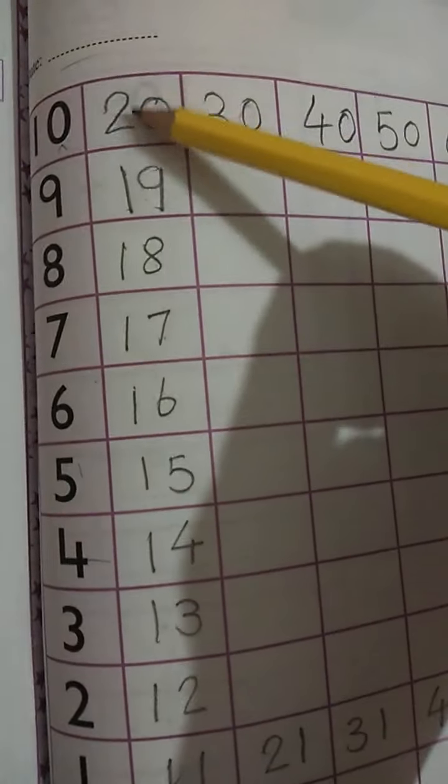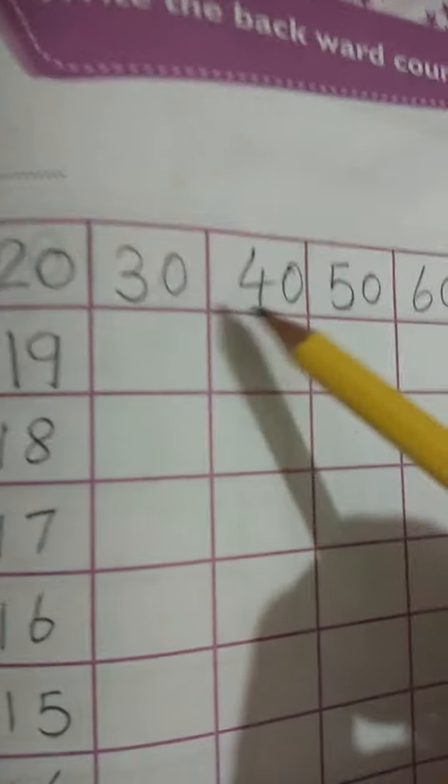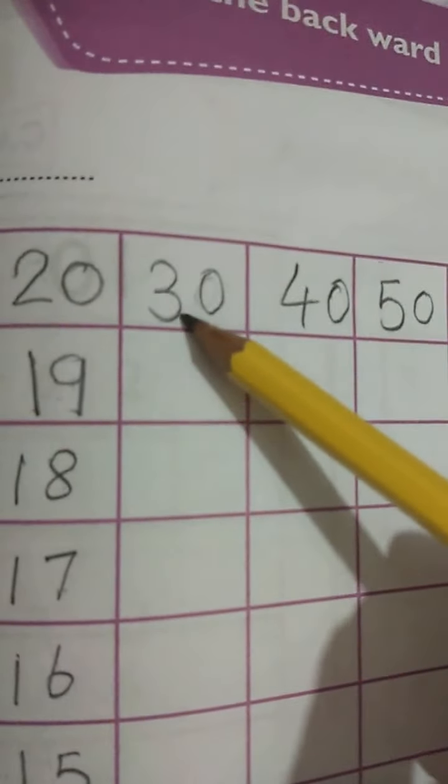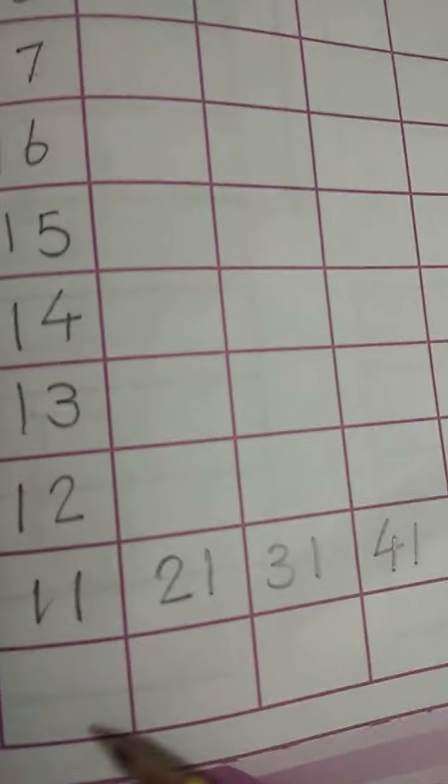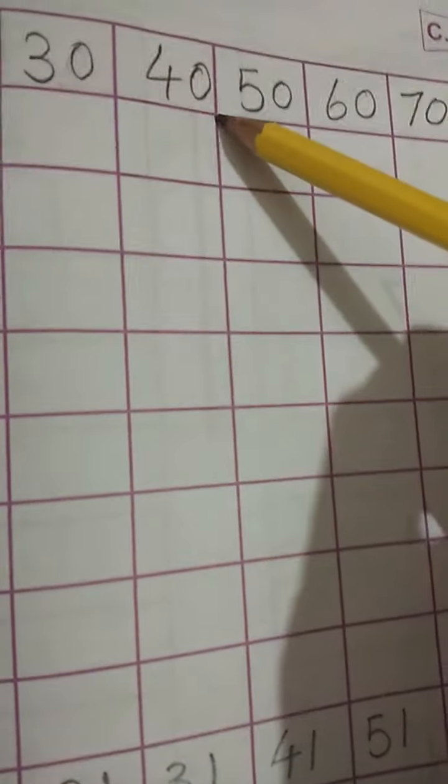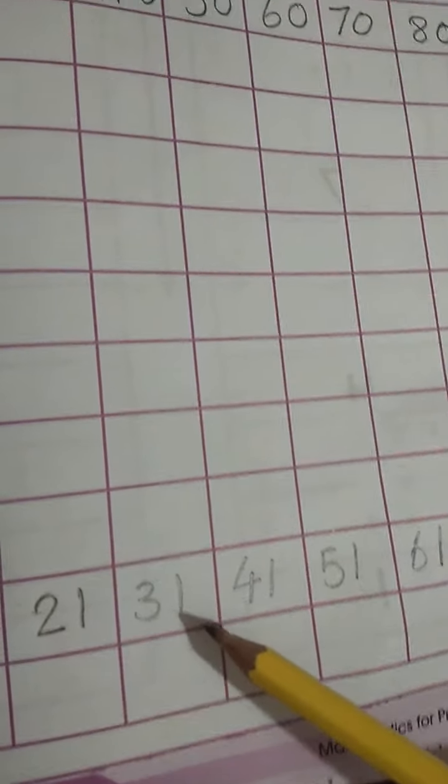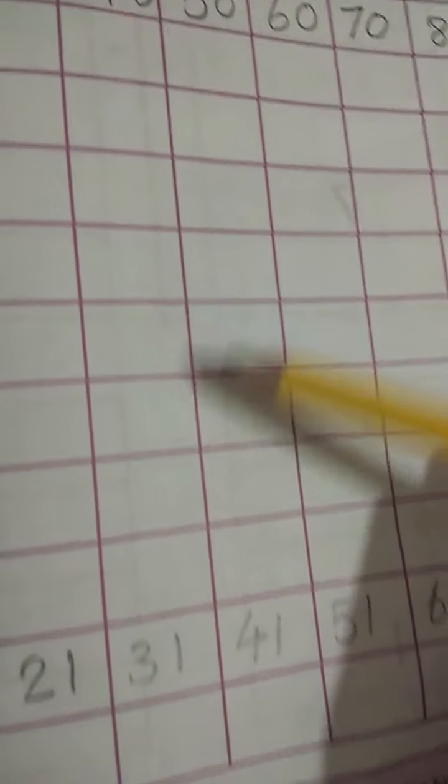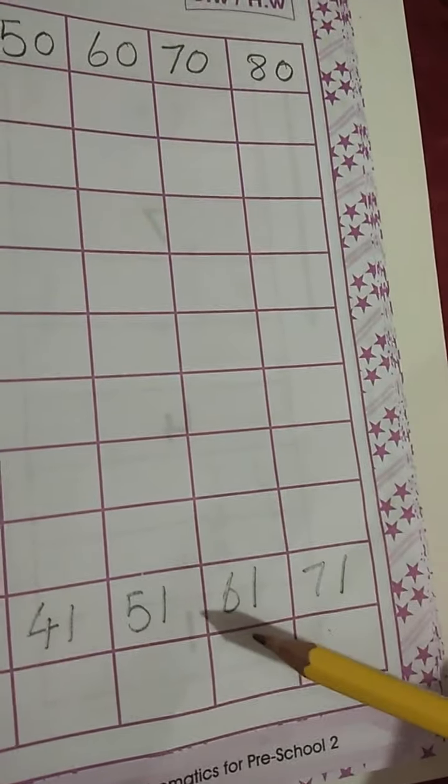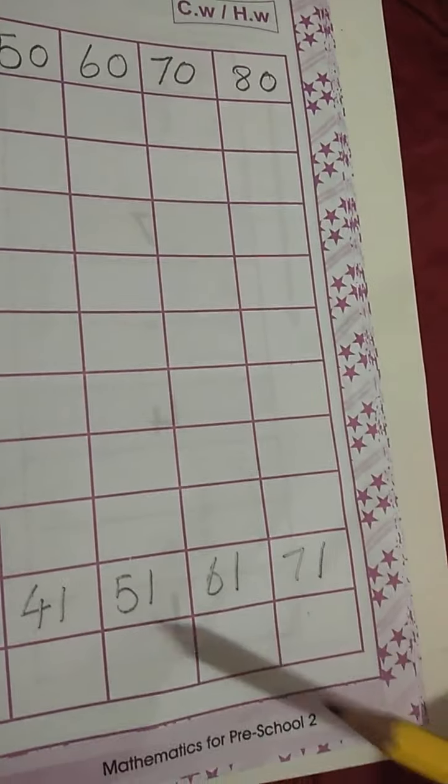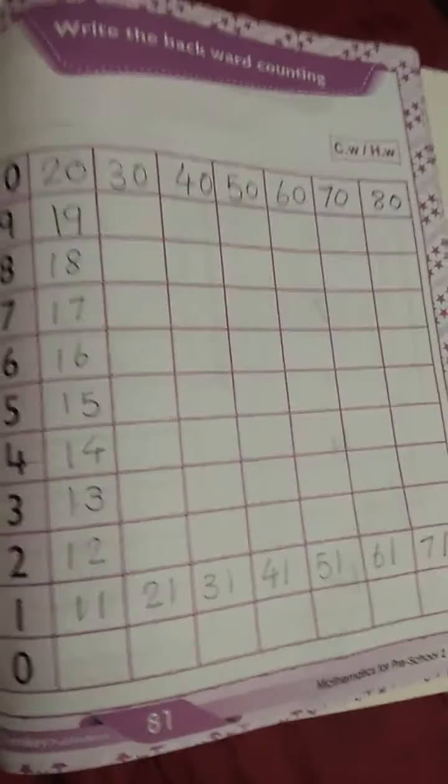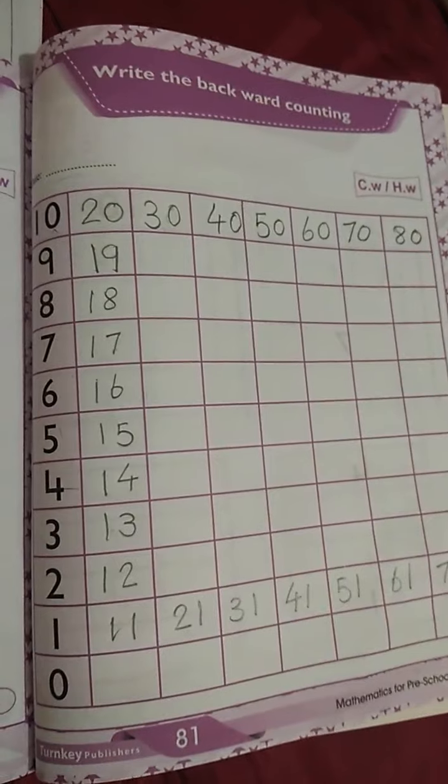from 11 to 20. But now you are going to start from 30 to 21, and 40 to 31, and 50 to 41, and 60 to 51, and 70 to 61, 80 to 71. So this is the way of backward counting.